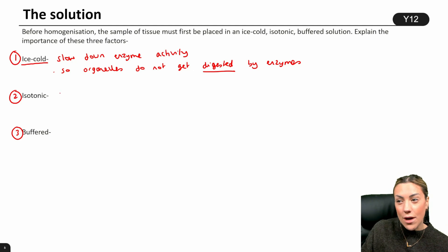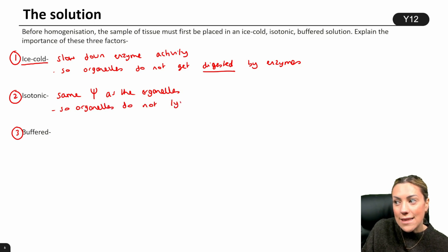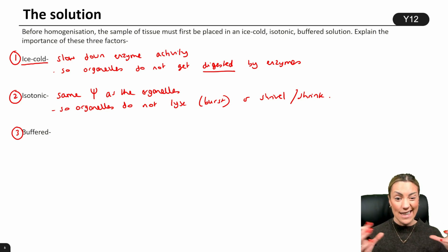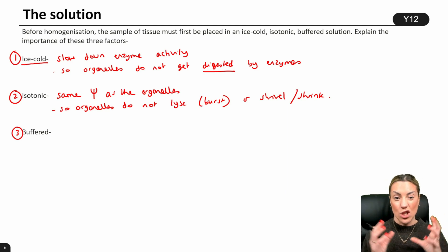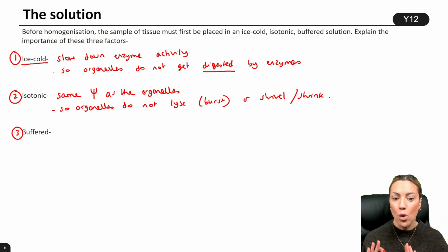The solution also needs to be isotonic, which means we want to keep the cells in a solution that has the same water potential as the organelles. This is so organelles do not lyse (burst) or shrivel or shrink. If the water potential of the solution was higher, water moves into the organelles and they could lyse or burst. If the water potential was lower, water would move out and the organelles would shrivel and shrink. We want to study the structure and function of these organelles, so we want no osmosis taking place into or out of the organelles.